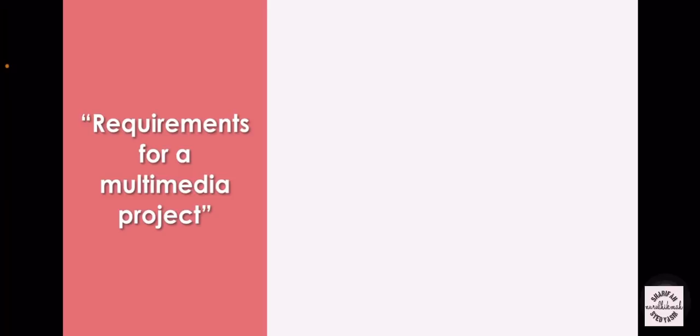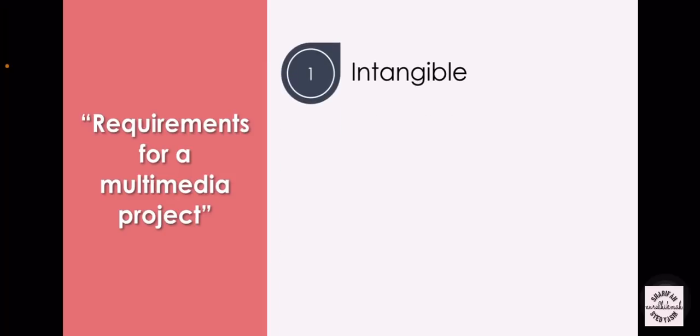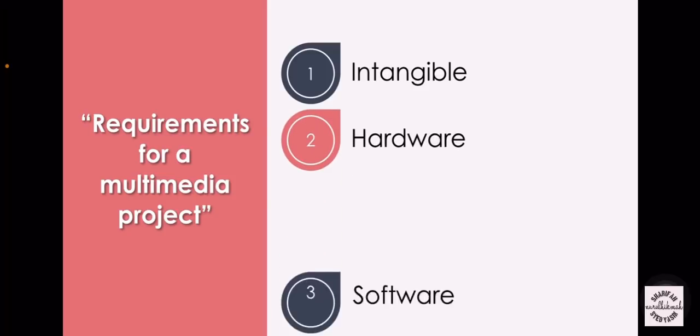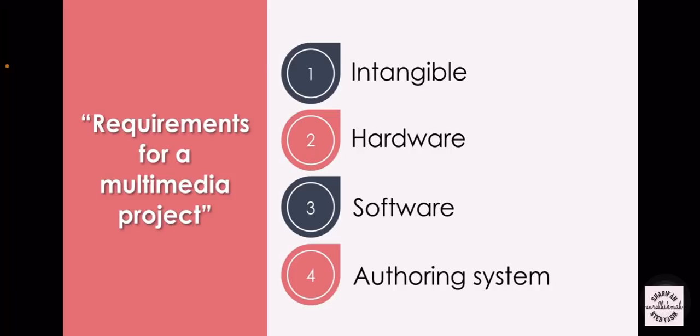Now let us move to the second subtopic for this chapter: requirements for a multimedia project. There are four requirements altogether. Number one is intangible requirements, number two is hardware, number three is software, and the last one is authoring system. Let us now move to the first requirement: intangible requirements.